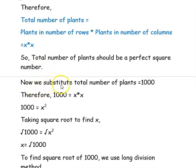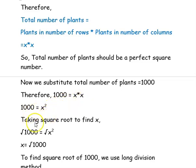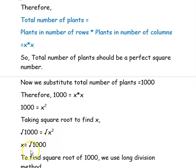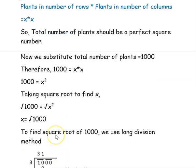Now we can substitute the total number of plants as 1000, since it is given. So 1000 equals x into x, that is 1000 equals x squared. Taking square root to find x: square root of 1000 equals square root of x squared. The square root and the square cancel, giving us x equals square root of 1000. To find the square root of 1000, we can use the long division method.